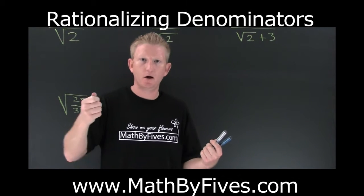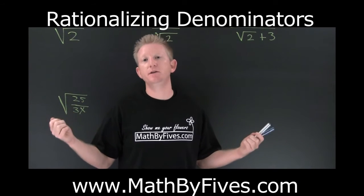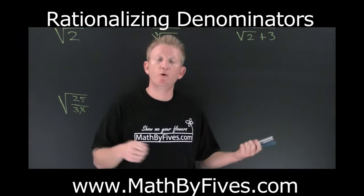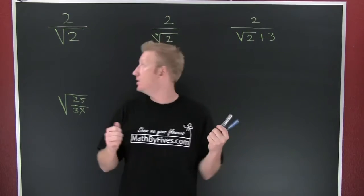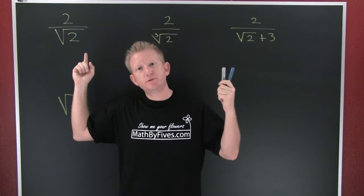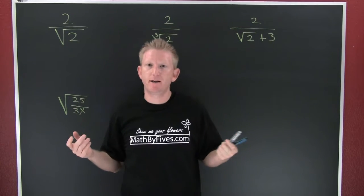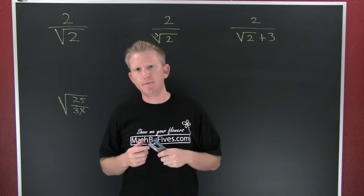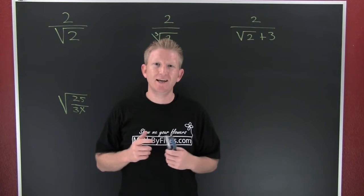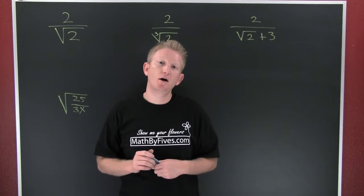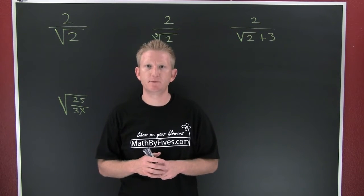Rationalizing the denominator. This is a relic from your dad's day or your grandfather's day. Why? Roots, if they can't be simplified, are irrational. That means that they have a non-terminating, non-repeating decimal. Back in the day, do you know how hard it was to divide by a non-repeating, non-terminating decimal?